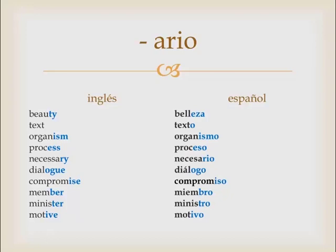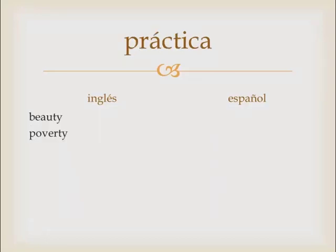That's the lesson — straightforward. Let's look at some practice. On a sheet of paper, try to figure out what these would be. If beauty is 'belleza,' what might the next one be? What might poverty be? I'll give you five seconds. Beauty goes to 'la belleza'; poverty is 'pobreza.' It's different enough that it's a cognate, but you would have to have that pointed out.